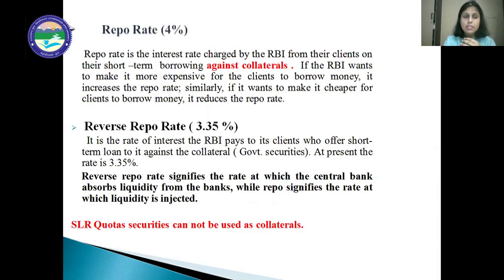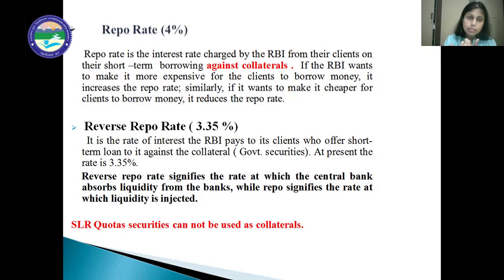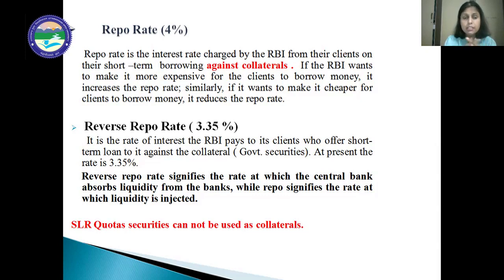The next tool is the repo rate. The repo rate is the interest rate charged by the RBI from its clients on short-term borrowings against collaterals. For short-term borrowings, clients — financial institutions or banks — must keep some securities as collateral with the RBI. If the RBI wants to make it more expensive for clients to borrow money, it increases the repo rate; if it wants to make it cheaper, it reduces the repo rate. At present, the repo rate is 4%.